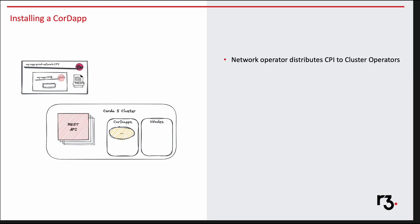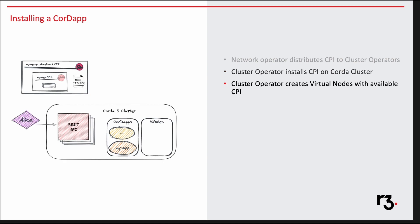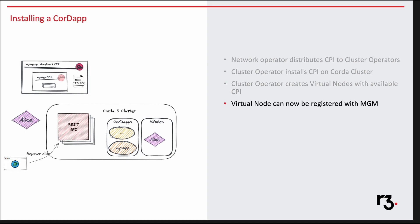The network operator takes the CPB file and links it to a group policy file, which references a particular network. These two combined form what is called a CPI file. It's very easy to create multiple CPI files — one for the QA network, one for the production network. The CPB remains the same; only the network information will change. Using the REST API, the CPI can be installed to a cluster. Once installed, the application is available to the cluster — it's equivalent to putting your app on the App Store, but no one is using it yet. The cluster operator creates a virtual node, and then it's registered with MGM, where the virtual node will request MGM to join the network. Once MGM approves, Alice will be able to participate in network transactions.